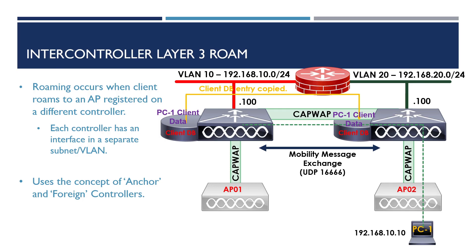You might be wondering how the client can use the IP address it obtained from the first controller on the new controller when they're both in different VLANs. It does this by creating a CAPWAP tunnel back from the wireless controller the client has associated with to the original wireless controller.